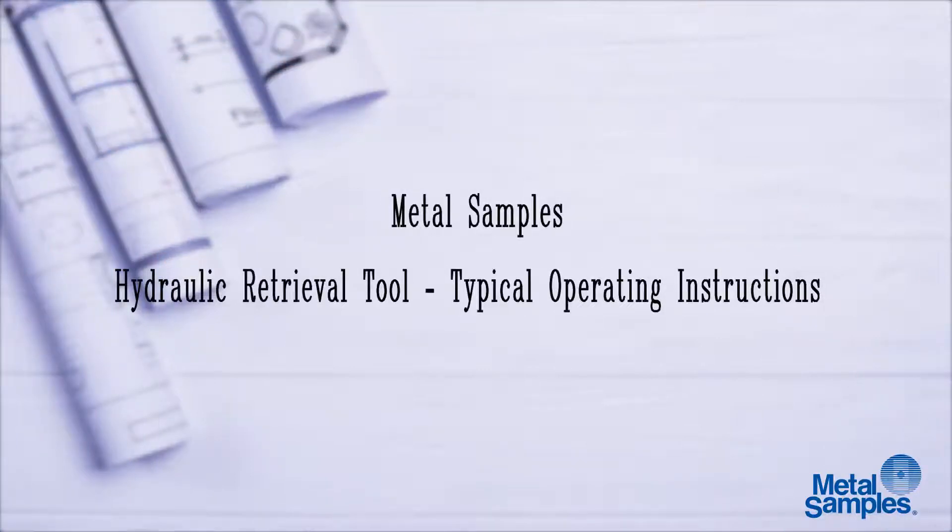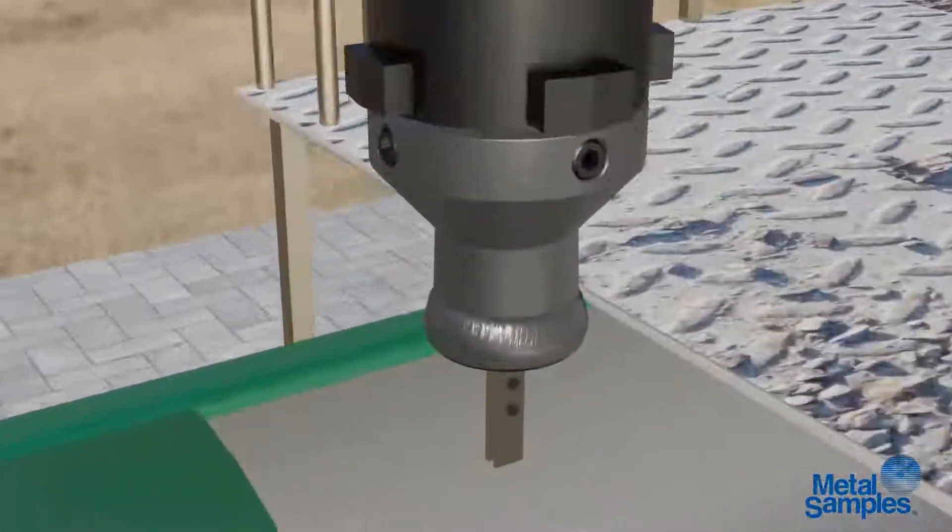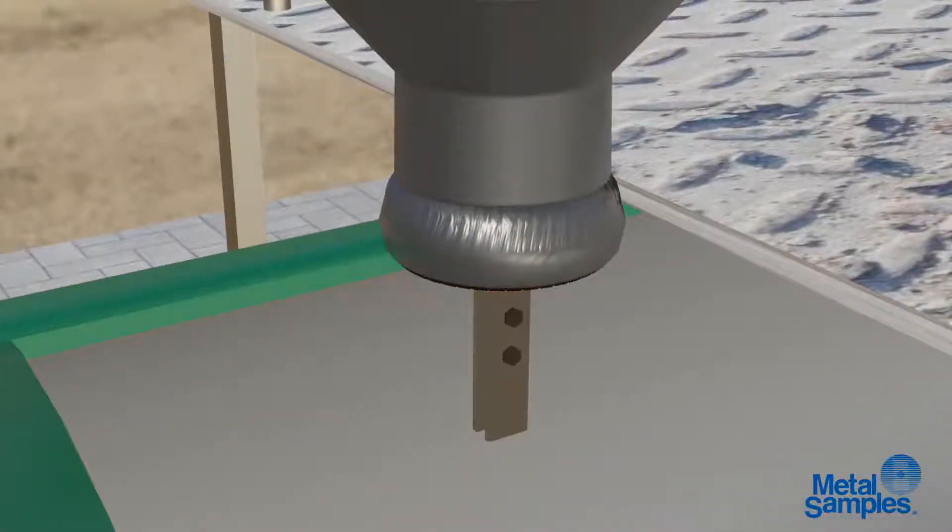A hydraulic retrieval tool is used to install and replace corrosion monitoring equipment like coupons and probes on high-pressure pipelines without taking a shutdown.